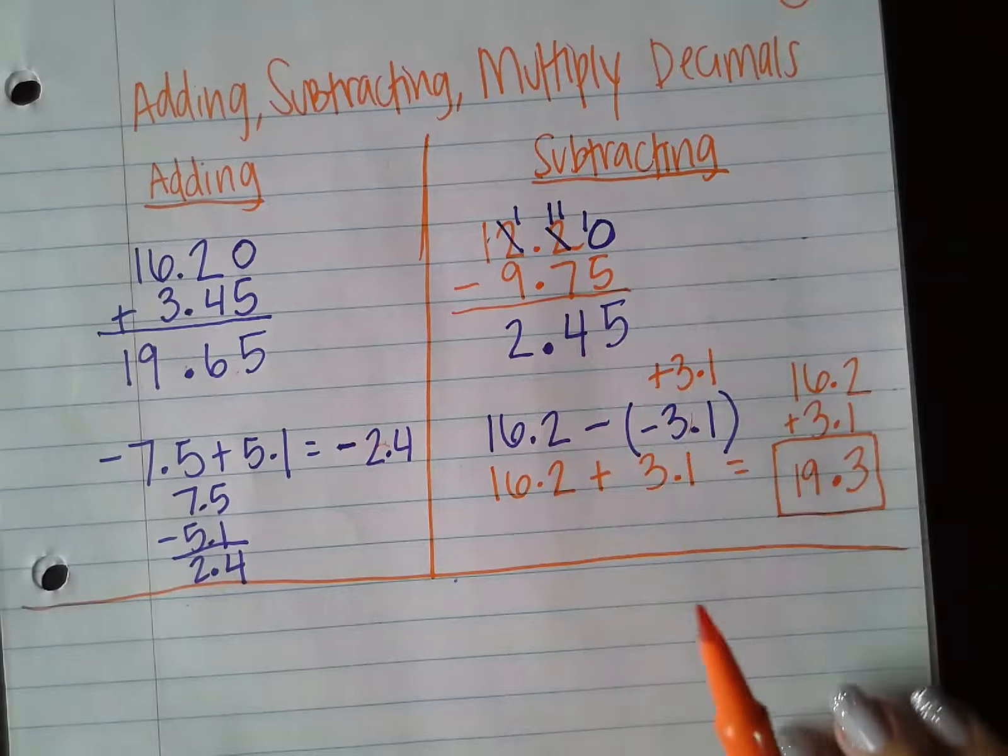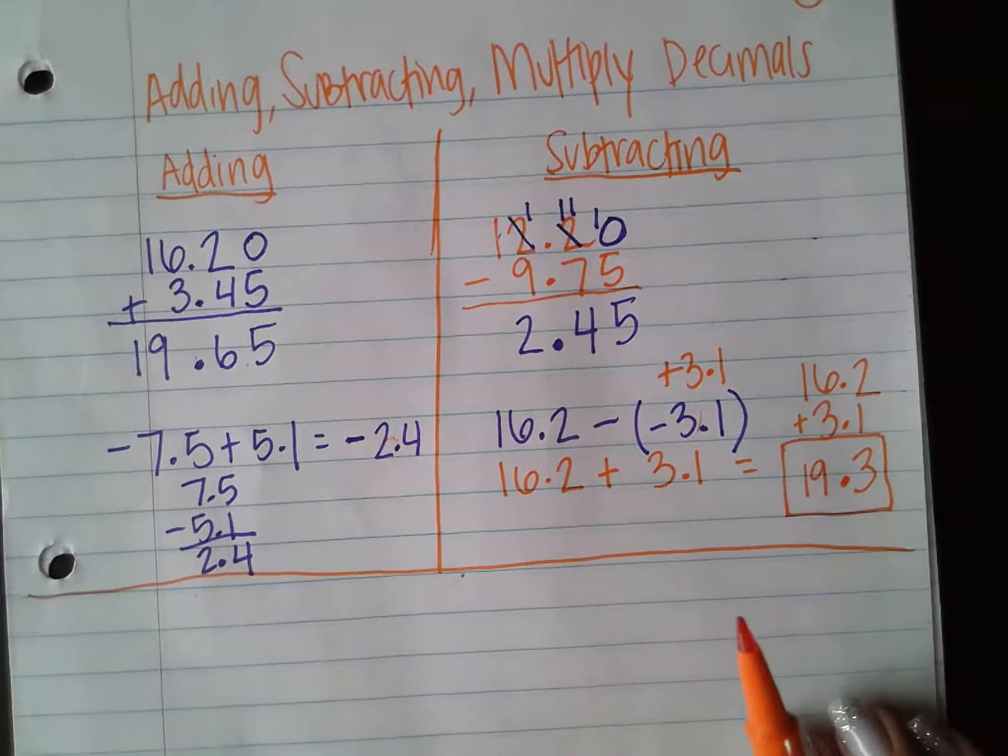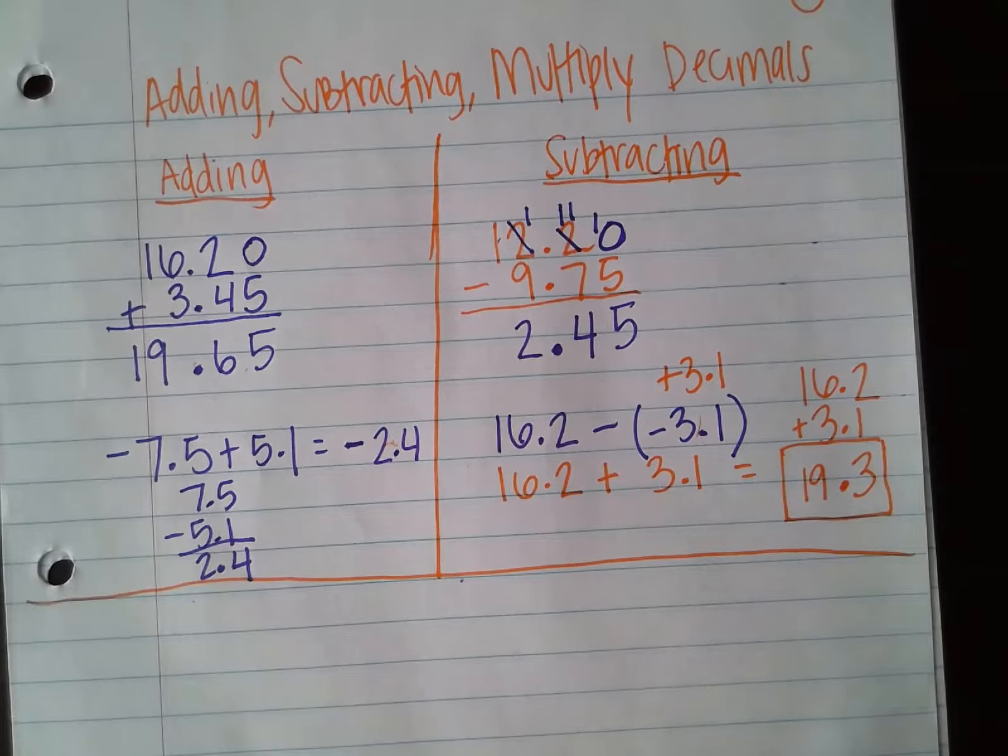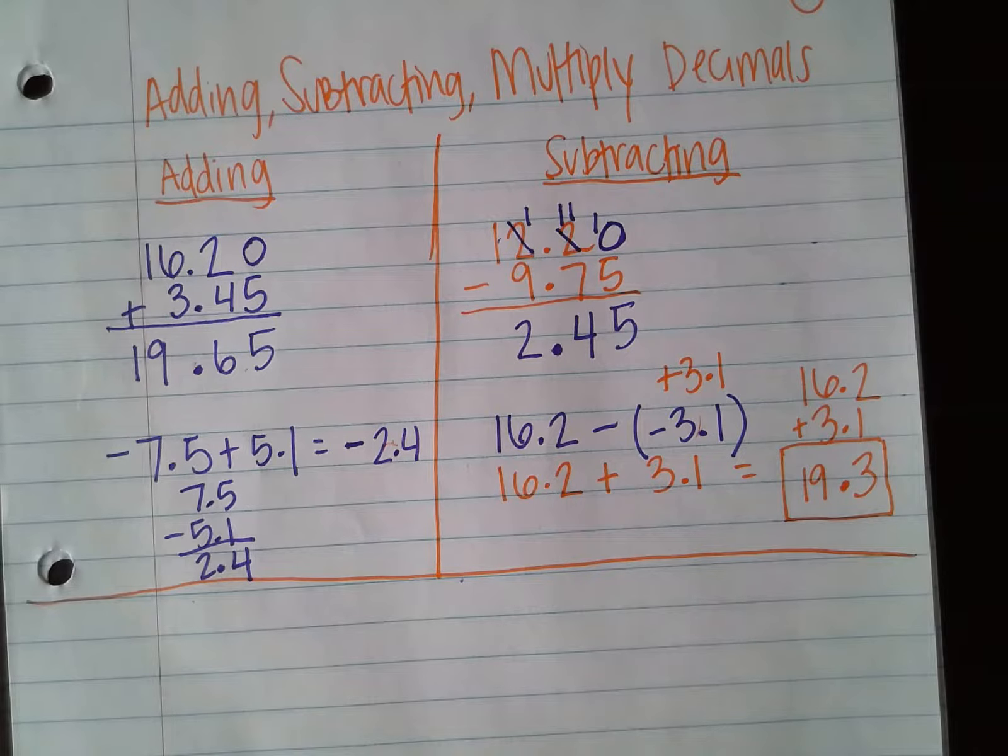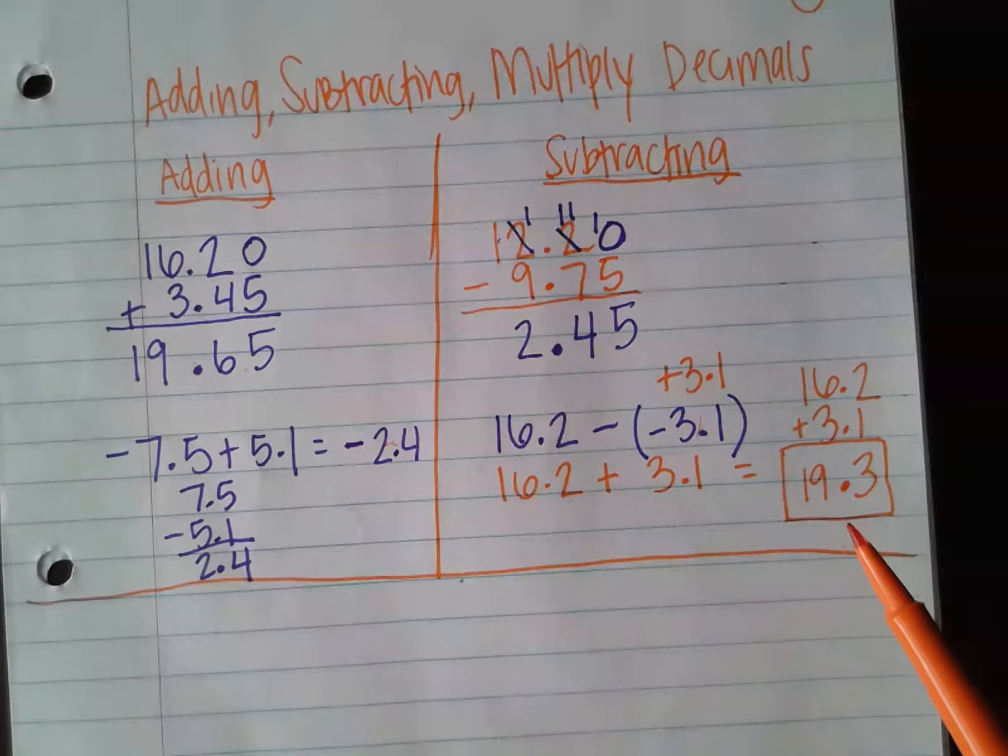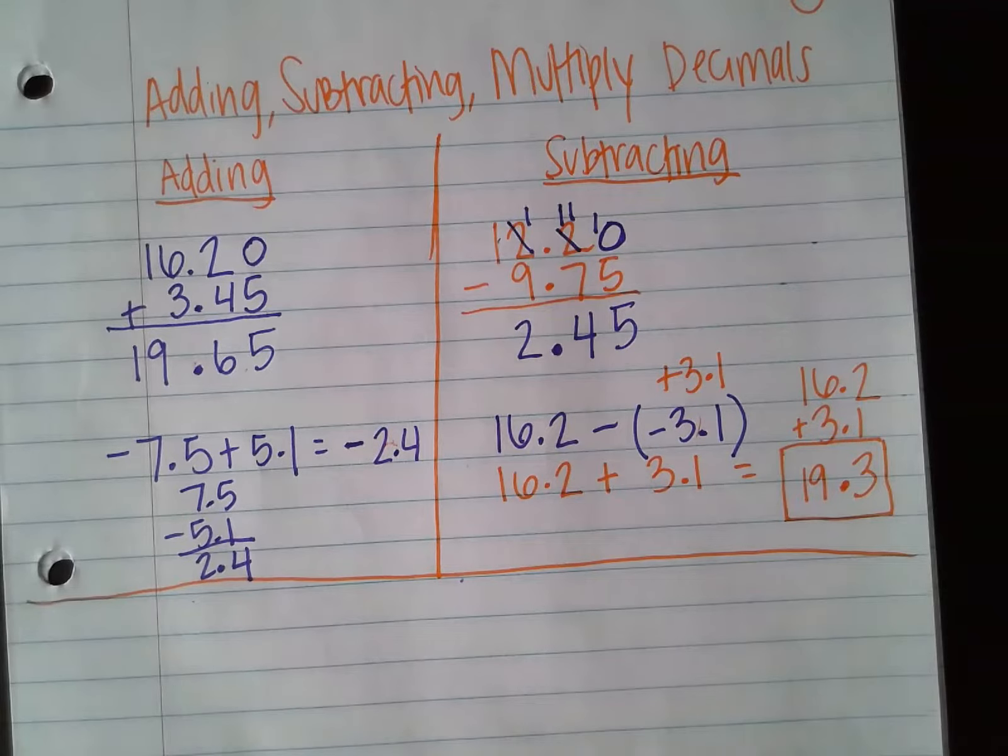Remember, not only do we need to line up place values, but we also need to keep in mind our integer rules. Because now that we have some decimals involved, we may have some problems where we end up in the negatives or we end up back up in the positives if we're subtracting by a negative.